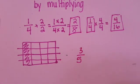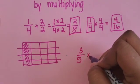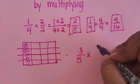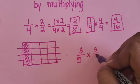If we have 3/5, we multiply 3/5 by a fraction that's equal to one whole. So let's try 3/3.